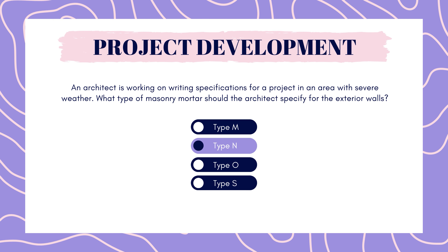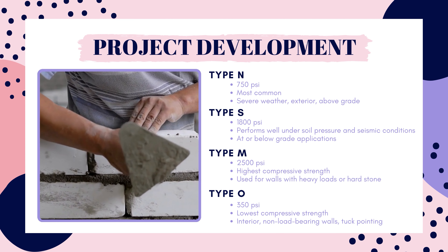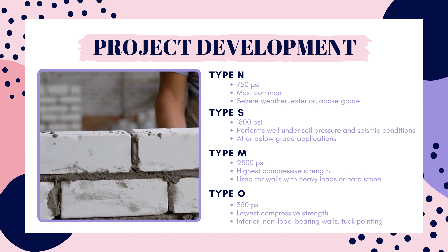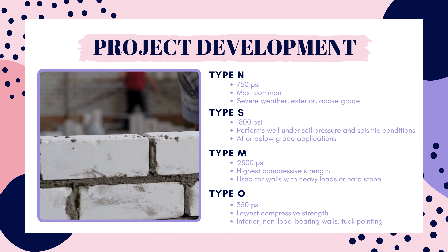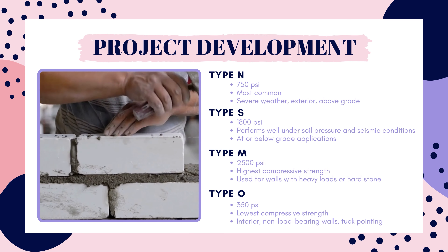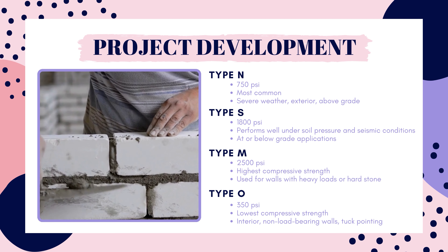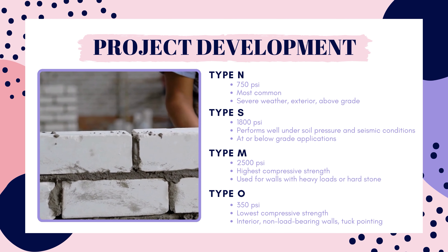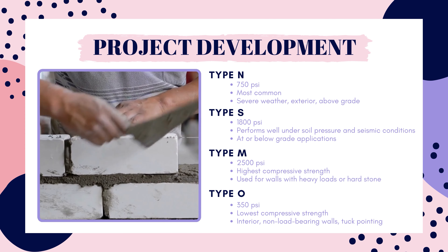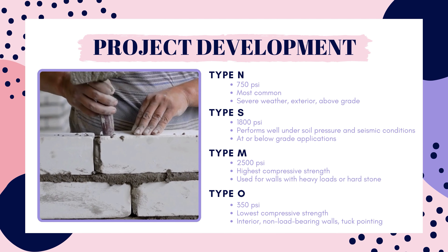The correct answer is Type N. Type N is typically recommended for areas exposed to severe weather and high heat. It is a medium compressive strength mortar at 750 psi and can achieve 28-day strength between 1500 and 2400 psi. Type N is typically used for exterior above-grade walls. Type S is used for at or below-grade applications with a higher compressive strength of 1800 psi, with some mixes reaching 2300 to 3000 psi — it performs well under soil pressure and in seismic conditions. Type M has the highest compressive strength at 2500 psi and is used for walls with heavy loads or harder stone. Type O has the lowest compressive strength at 350 psi and is used for interior non-load-bearing walls; its higher lime concentration makes it more flexible and easy to apply, so it's also often used for tuck pointing.